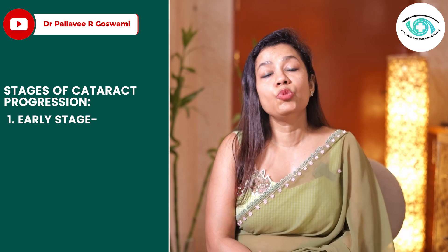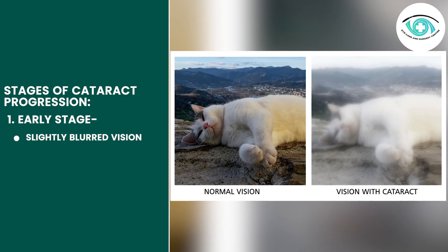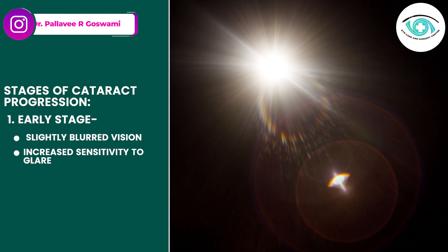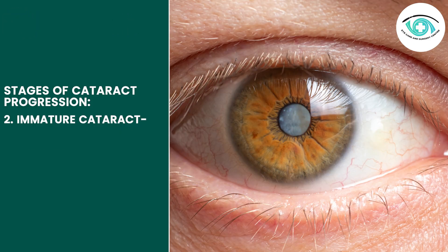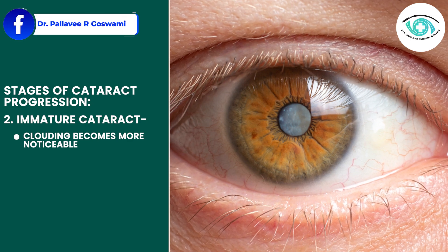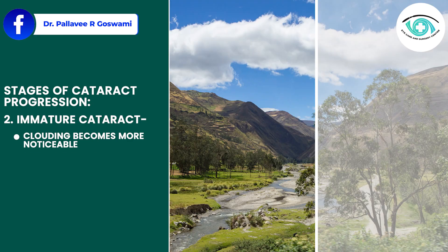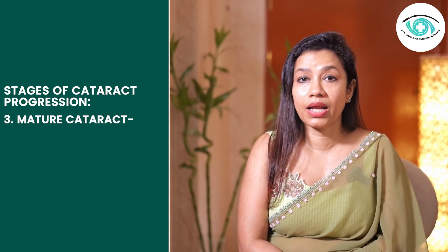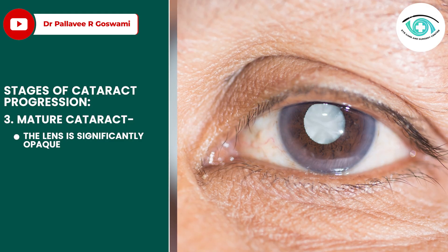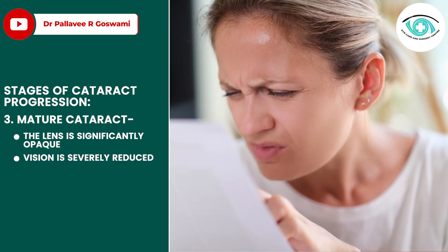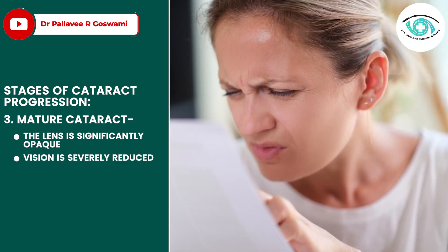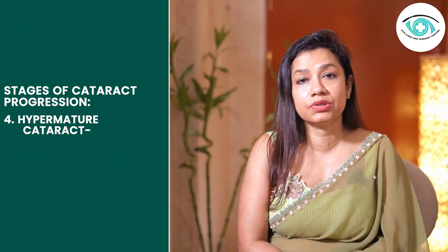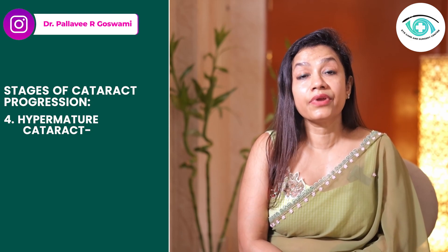Let's briefly talk about the stages of cataract progression. In the early stage, you may notice slightly blurred vision or increased sensitivity to glare, especially at night. In the immature cataract stage, the clouding becomes more noticeable, contrast decreases, and colors seem to fade. Next is the mature cataract, where the lens is significantly opaque and vision is severely reduced.